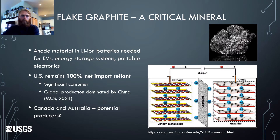Flake graphite has been designated a critical mineral by the U.S., in large part because of its use as anode material in lithium-ion batteries needed for electric vehicles, energy storage systems, and portable electronics. It will be a crucial commodity for the transition to net zero carbon emissions. The U.S. remains completely import-reliant on graphite, mainly from China, and will be a significant consumer. Graphite criticality is also important to countries like Australia and Canada that will consume less but could be potential producers.